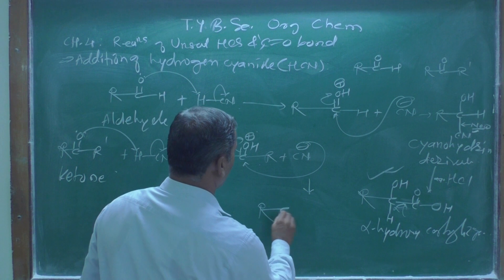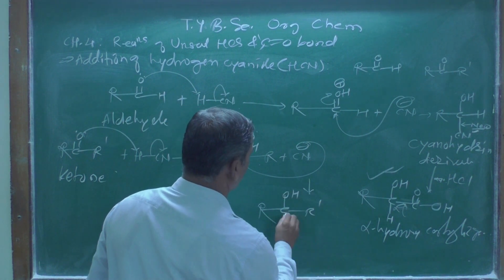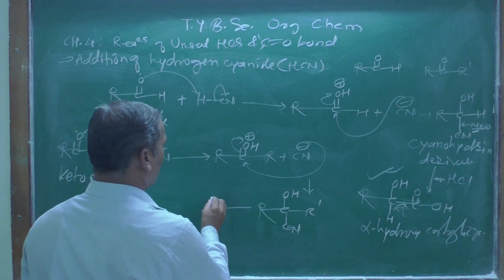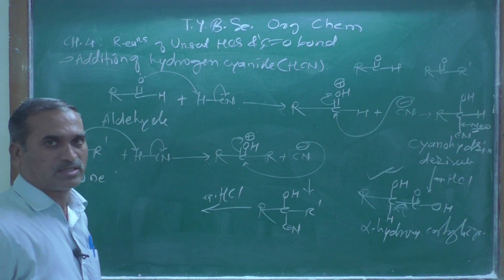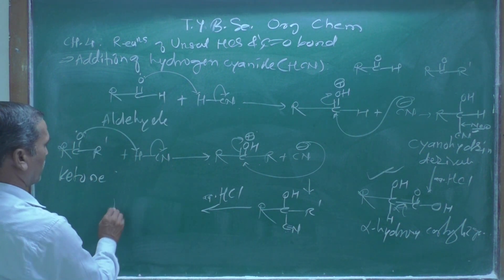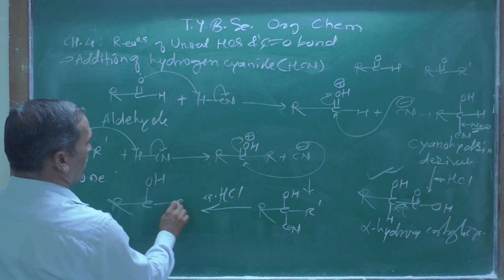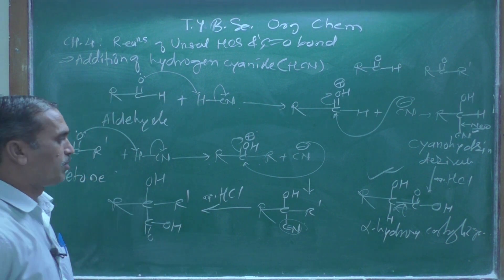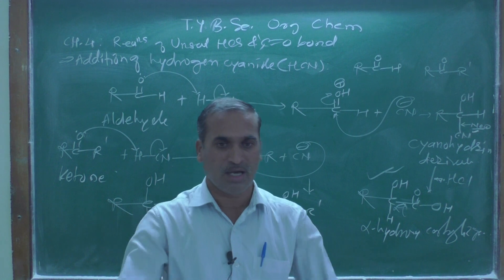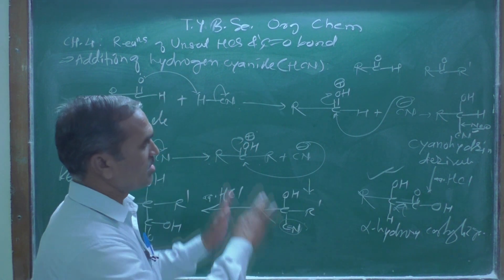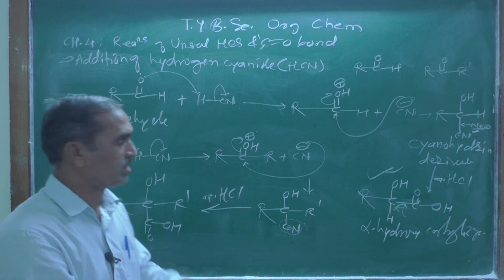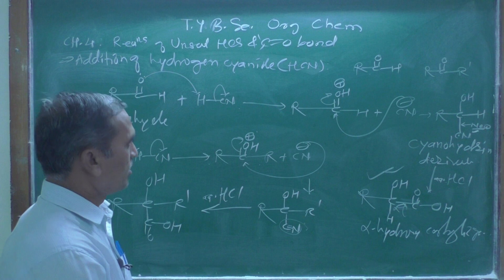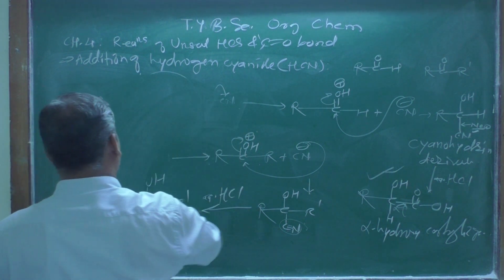We get the product R-C(OH)(CN)-R', which is further treated with aqueous hydrochloric acid. The cyanide group is converted into a carboxylic group, giving R-C(OH)(R')-COOH — the alpha-hydroxy carboxylic product. If you know this reaction mechanism, you can predict the products for a number of substrates, as I will now demonstrate with some examples.